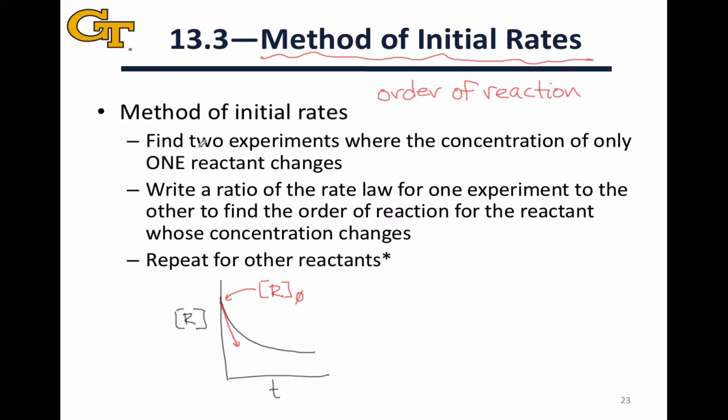In the table of results, we look for two experiments where only one concentration changes, the concentration of only one reactant changes across those two experiments. We then take the rate laws for those two runs and write a ratio of them. In that ratio, since all of the concentrations but one are controlled, all the concentrations will divide out except for the one we're interested in.